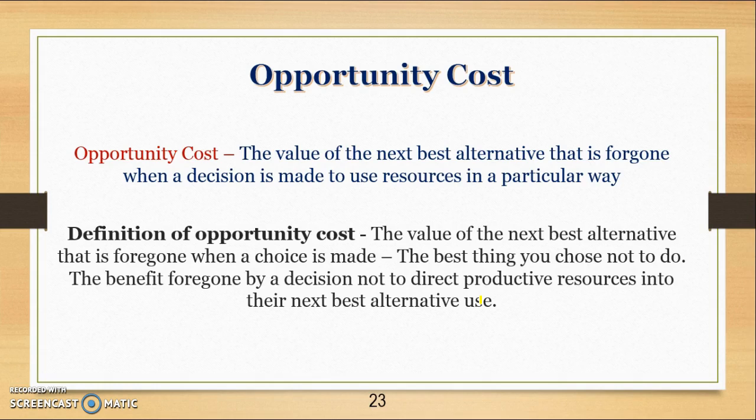The opportunity cost is the value of the next best alternative that is forgone when a choice is made — the next best thing you choose not to do. If you decide you want to become a lawyer and the next best thing you'd want to do with your labour resources is become a carpenter, then a carpenter would be your opportunity cost. If you spent $5 on a sandwich, your next best alternative would be to spend it on a sausage roll — that would be your opportunity cost.